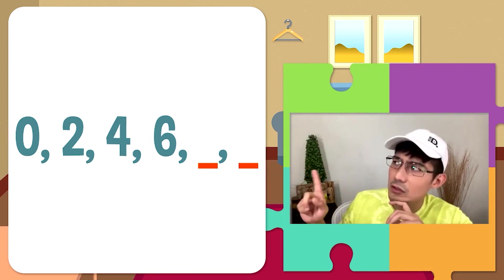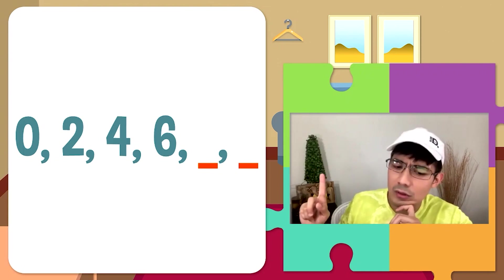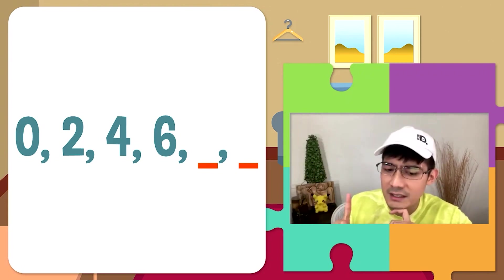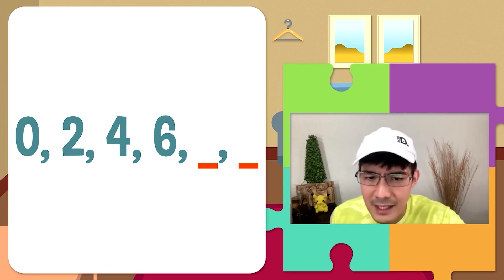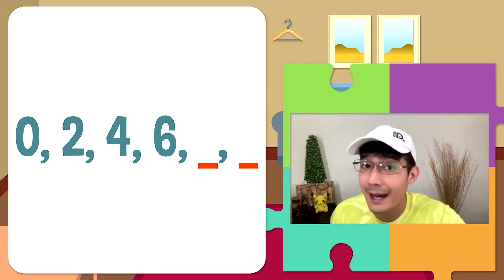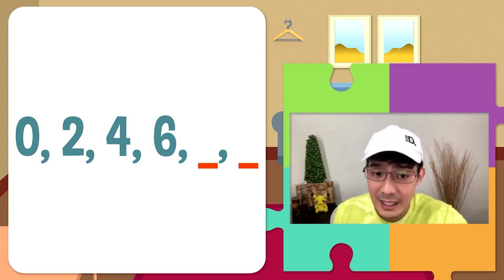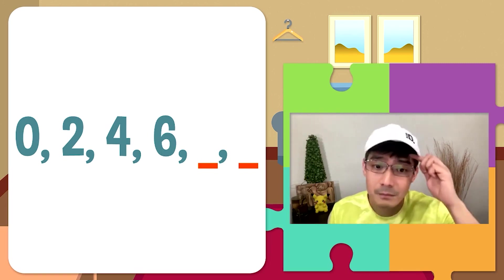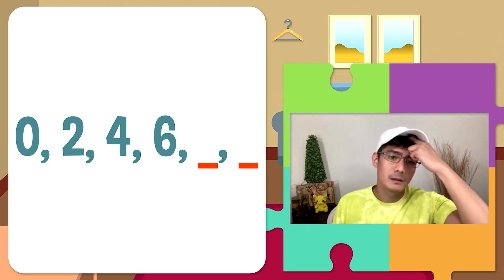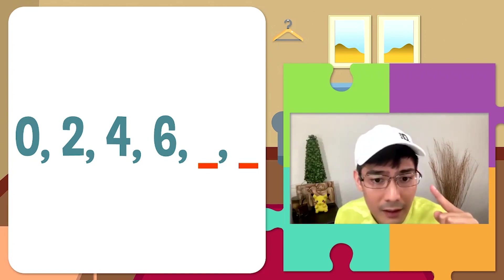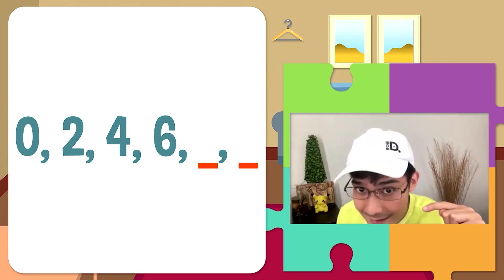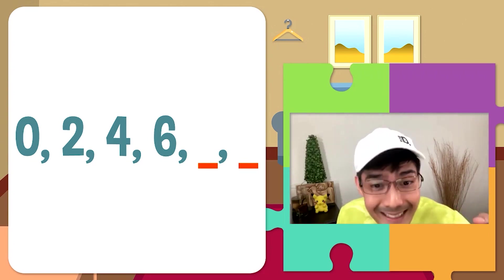Nakikita natin dito: 0, 2, 4, 6, at dalawang blanks. Ano sa tingin yung missing numbers, o yung mga next terms sa number sequence na ito? Ang missing terms ay 8 and 10.